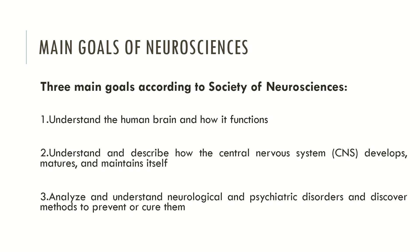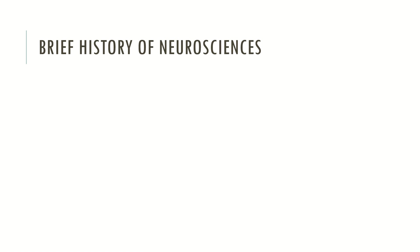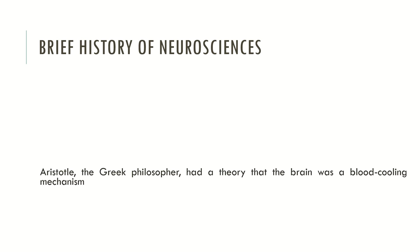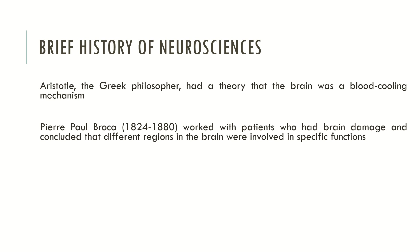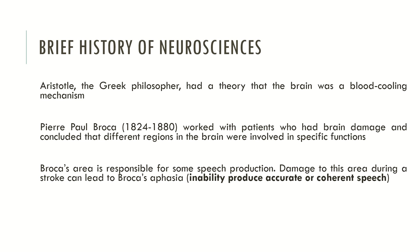Now let's look at a brief history of Neurosciences. As seen in previous videos, Aristotle, the Greek philosopher, had a theory that the brain was a blood cooling mechanism. Moving to a more contemporary approach, Paul Broca worked with patients who had brain damage and concluded that different regions in the brain were involved in specific functions. Broca's area is responsible for speech production, and damage to this area during a stroke can lead to Broca's aphasia — the inability to produce accurate or coherent speech.